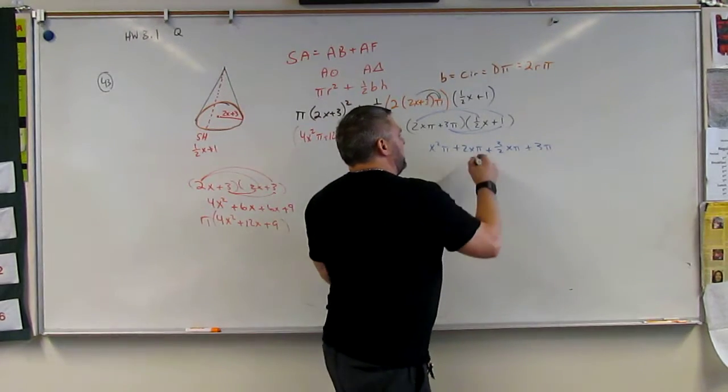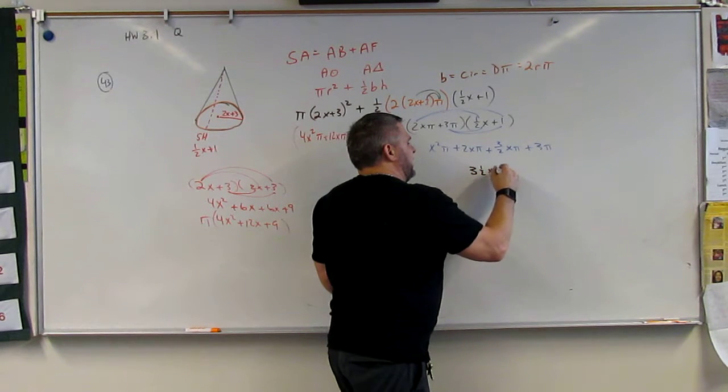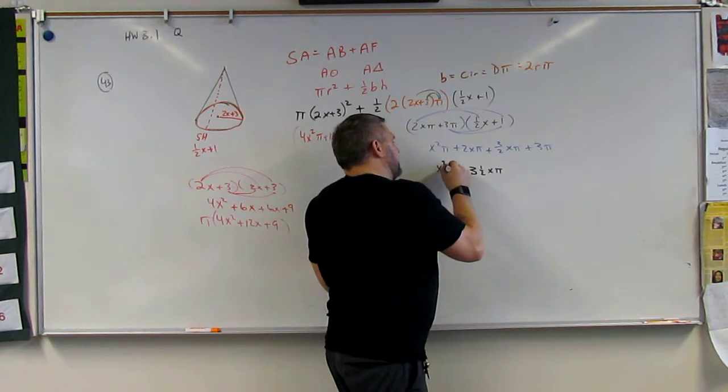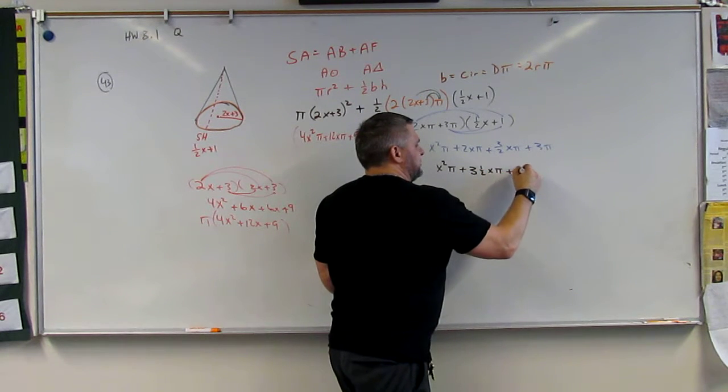Nevertheless, this would be 3 and 1 half x pi. This is x squared pi, and this is plus 3 pi.